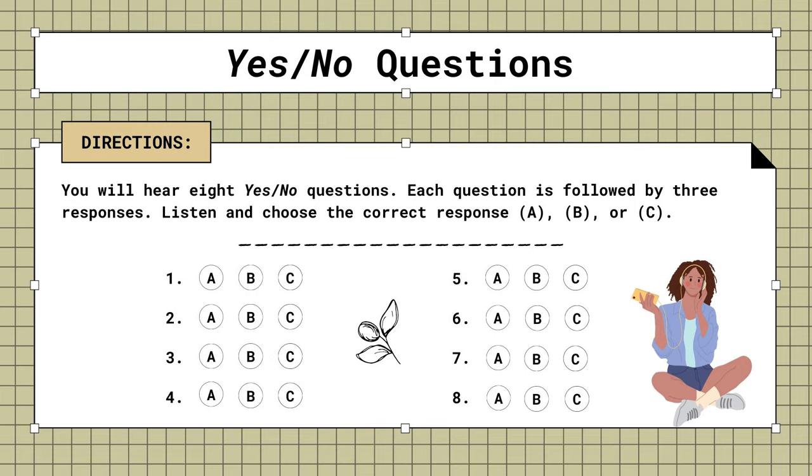2. Did you come by car? A. I took the train. B. It's not so far. C. I'd love to come.